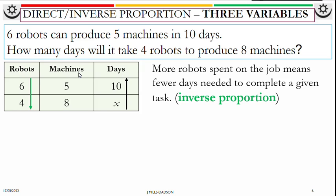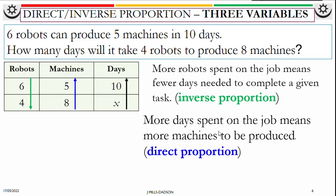Let's look at days and machines. More days spent on a job means more machines will be produced. If you spend more days producing, you will produce more machines. So that is direct.